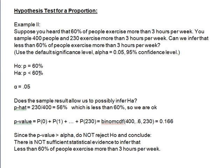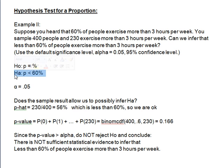First we have to set up our hypotheses. The alternative is what we could possibly infer. Can we infer that less than 60%? So clearly this is a proportion, and the alternative hypothesis is going to be less than 60% — that less than 60% exercise more than 3 hours per week.